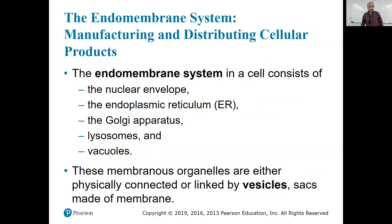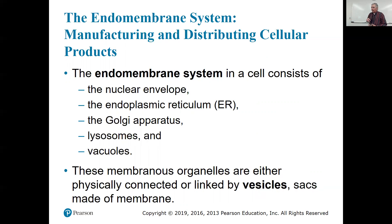Lysosomes are the recycling center of the cell — something broken is sent in, taken apart, and things that can be reused are reused. Vacuoles are vesicles, mostly found in plant cells, usually filled with watery fluid and sometimes food. Membranous organelles are either physically connected or linked by vesicles. A protein made in the rough ER gets put into a vesicle, which goes to the cytoplasm and merges with the Golgi apparatus membrane for the protein to be finished.